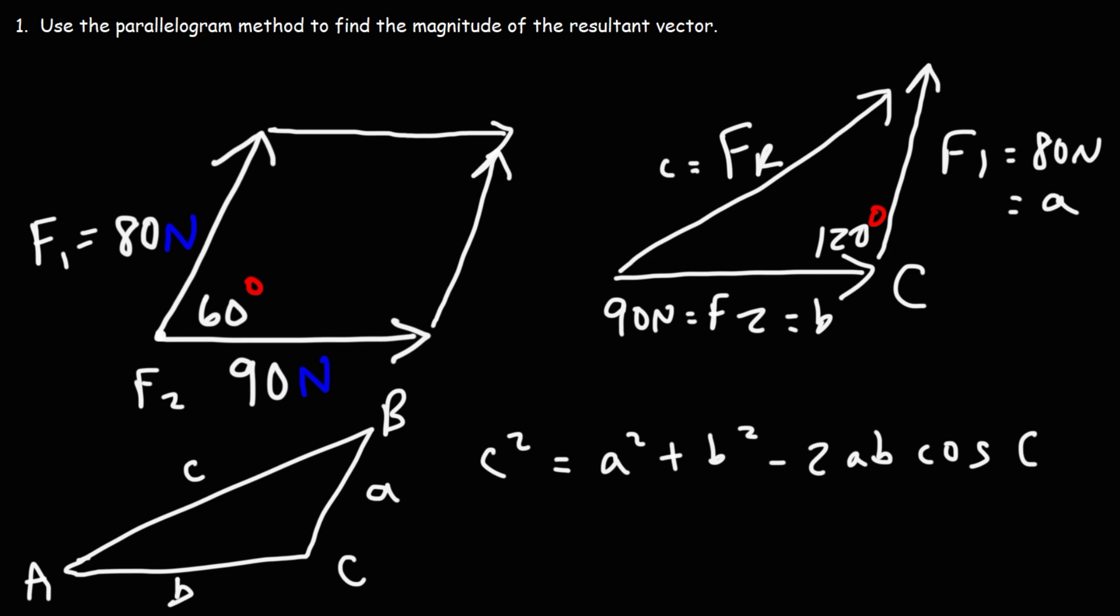We don't really need angle A and angle B in this problem. Our goal is simply to find the magnitude of the resultant vector. Once we get that, we could use the law of sines to get these other angles if we need it. But we're just going to focus on the magnitude of FR, the resultant vector.